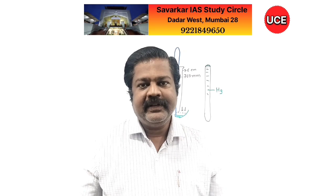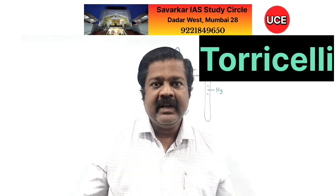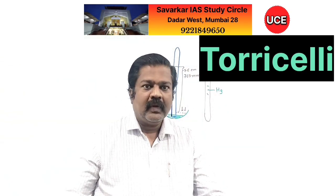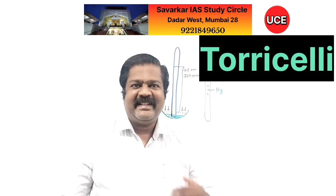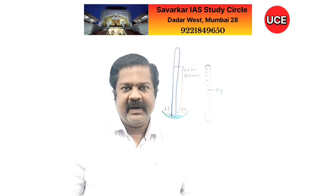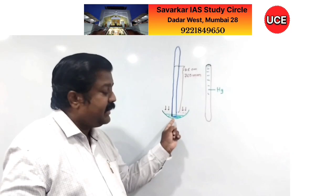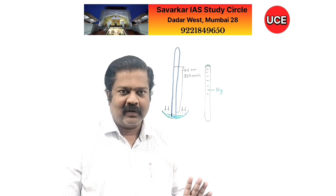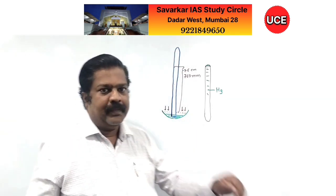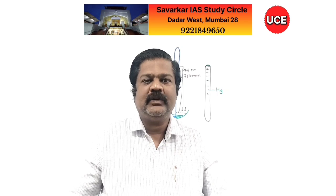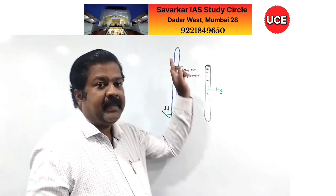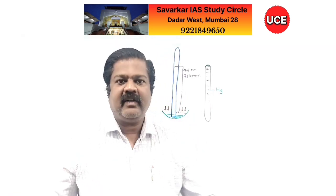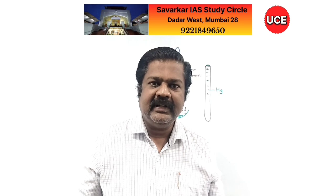760 mm of mercury is considered as one atmospheric pressure. This instrument is called a barometer, designed by Torricelli. The space above the mercury in the tube is a vacuum — called Torricelli's vacuum — because mercury is a dense metal in liquid state and when going down, it does not displace air. If air were displaced, the barometer would not work.